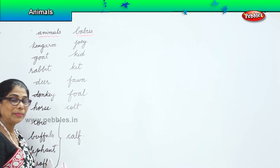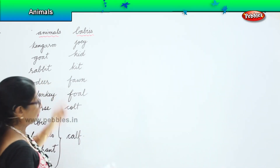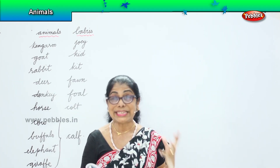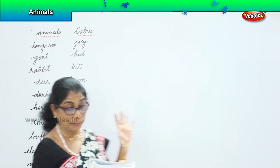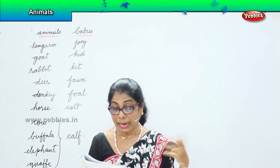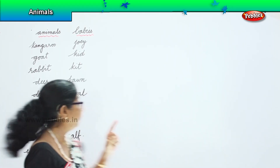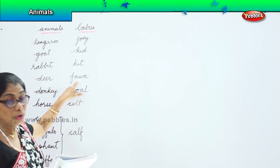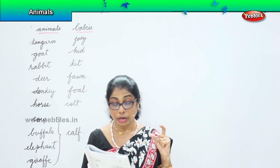Now let's look at something interesting about the deer. The deer's baby is called a fawn. A male deer is usually called a buck, a female deer is called a doe, and their baby is called a fawn.